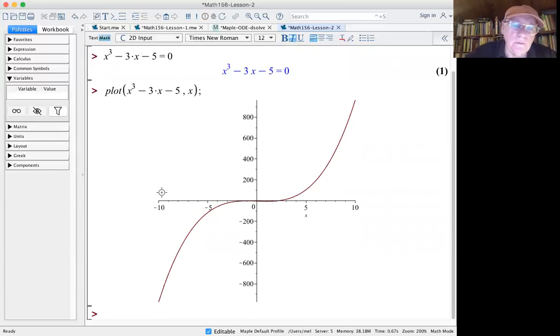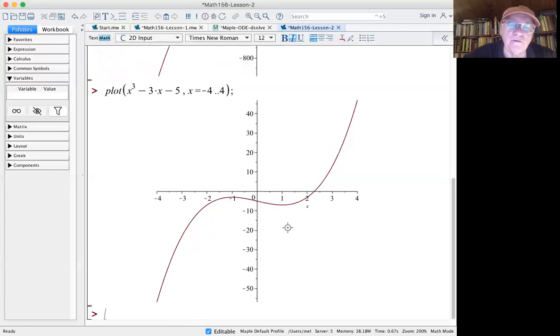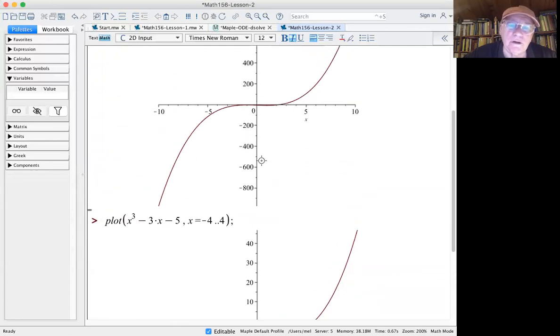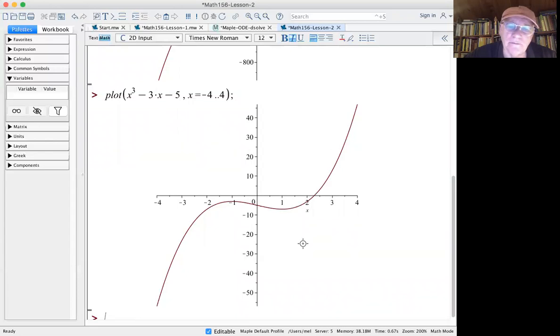So the default in Maple is to plot the graph of a function from minus 10 to 10. That's what's going on here. And where it's crossing the x-axis is somewhere in this region, but you can't see very clearly what's going on. So the smart thing to do, if we want to understand the graph of the function in here, is to plot it not from x equal to minus 10 to 10, but we can specify the range of the x-axis by writing x equals, and let's say minus 4 to 4.